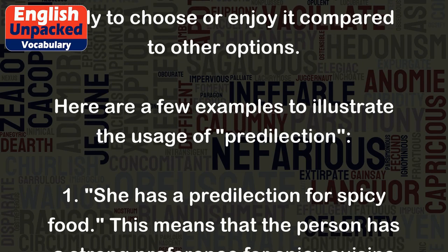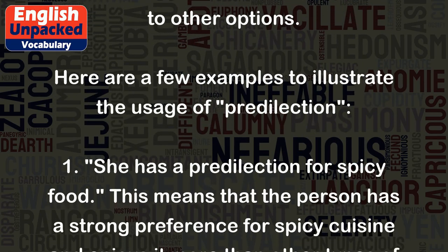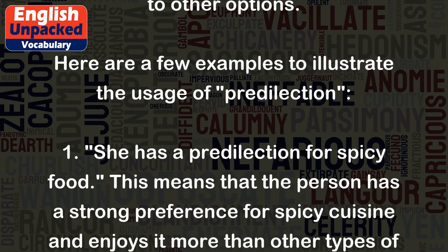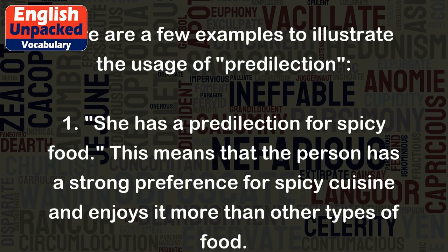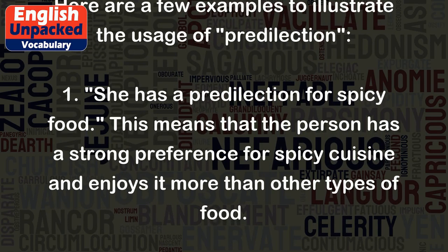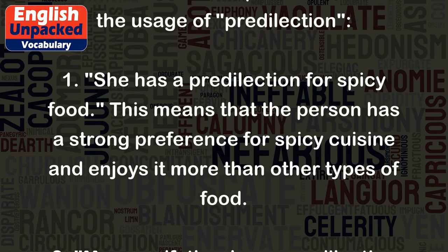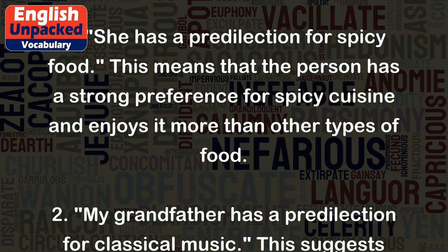1. She has a predilection for spicy food. This means that the person has a strong preference for spicy cuisine and enjoys it more than other types of food.